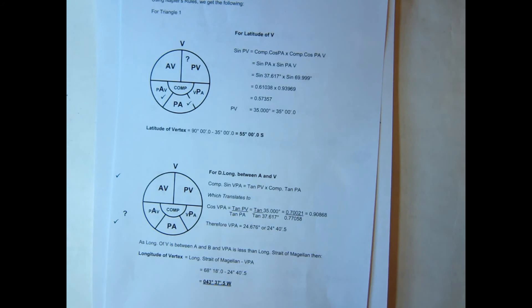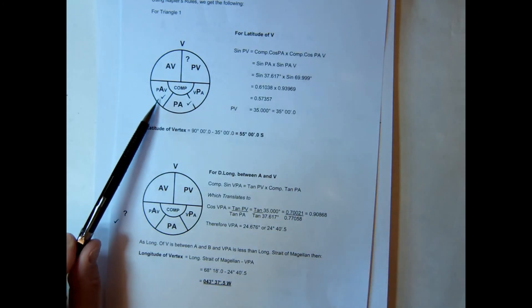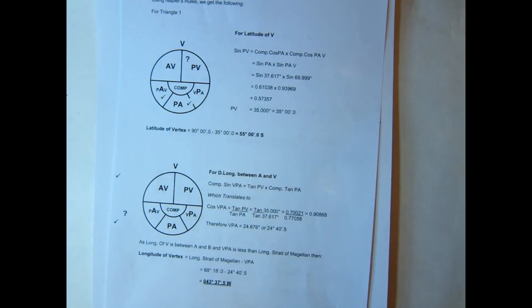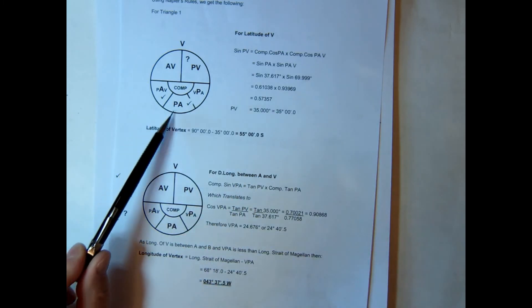Once we've established the situation with the vertex, we can now use Napier's rules to work out our latitude of the vertex using the initial course and the initial latitude or PA for the latitude, and that gives us our vertex.